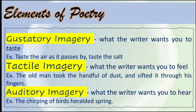Next is tactile imagery — it is what the writer wants you to feel. Example: 'The old man took the handful of dust and sifted it through his fingers.' And the last is auditory imagery — it is what the writer wants you to hear. Example: 'The chirping of the birds heralded spring.'